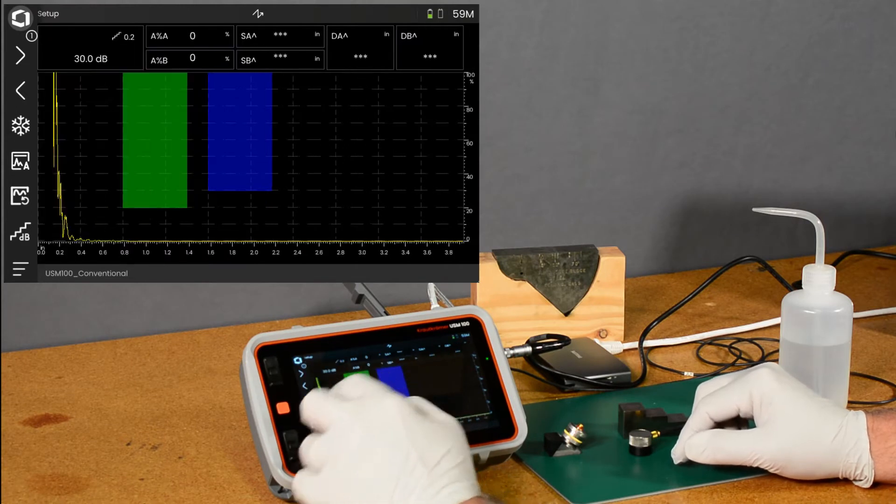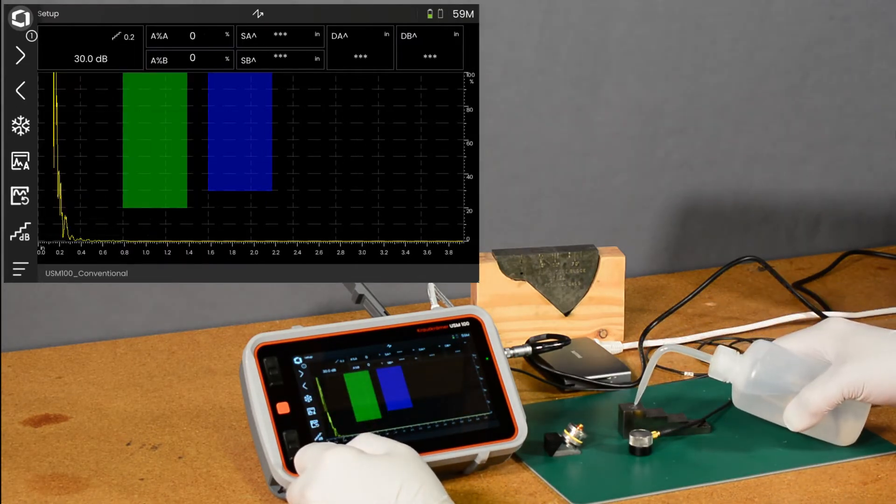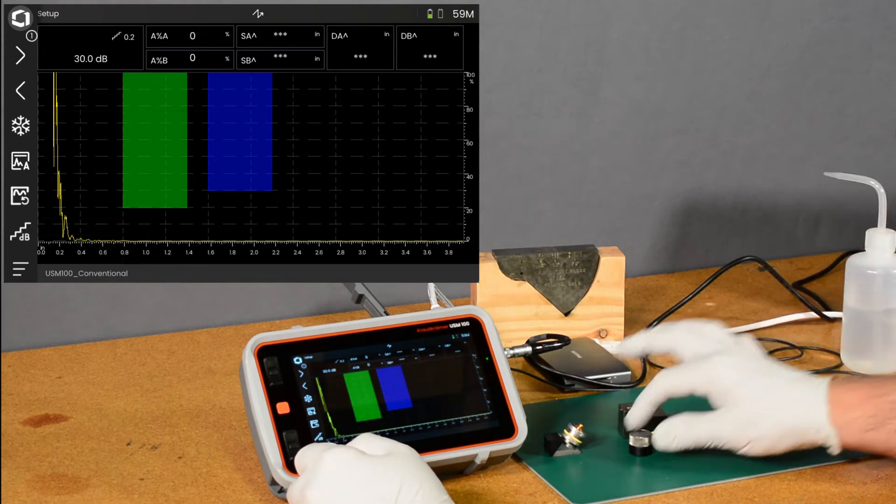and we see that's already set to 5 MHz. So we're at a good starting point. Let's put a little coupling on our block, and we'll just look at 1 inch here.